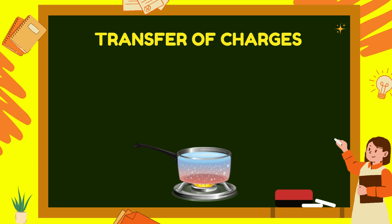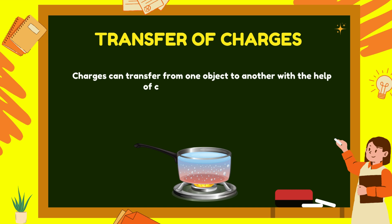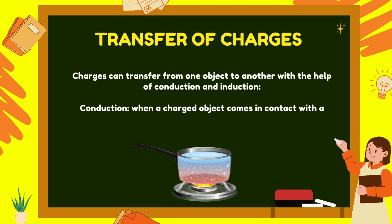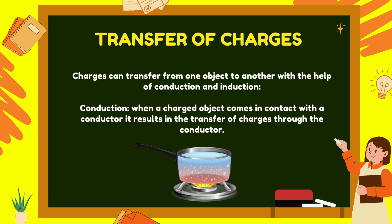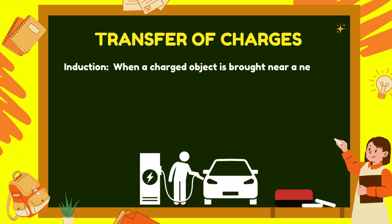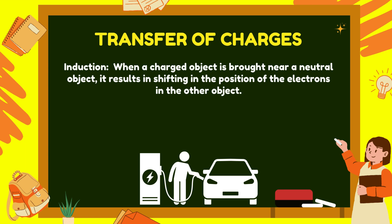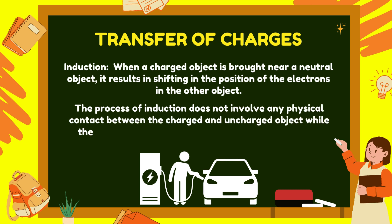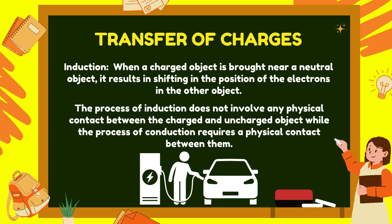Transfer of charges: Charges can transfer from one object to another through conduction and induction. Conduction occurs when a charged object comes in contact with a conductor, resulting in the transfer of charges through it. Induction occurs when a charged object is brought near a neutral object, causing a shift in the position of electrons in that object. Induction does not require physical contact, while conduction does.